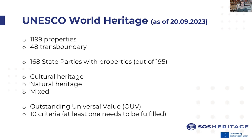UNESCO World Heritage is kind of the top of the pyramid — the highest level that cultural heritage can reach on an international basis. There is also natural heritage and mixed cultural-and-natural heritage. As of 2023, there are 1,199 properties listed as UNESCO World Heritage, 48 of them transboundary. Of the 195 states that ratified the convention, 168 have properties listed. Central to UNESCO World Heritage is that each site must have an Outstanding Universal Value (OUV), which consists of 10 criteria of which at least one must be fulfilled.